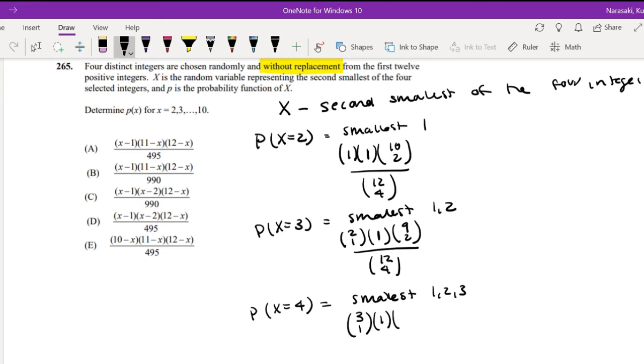And then how many cards do I have left over? I already picked 1, 2, 3, and 4. So that means I have 8 cards left, and I choose 2. And again, the total is the same: 12 choose 4.